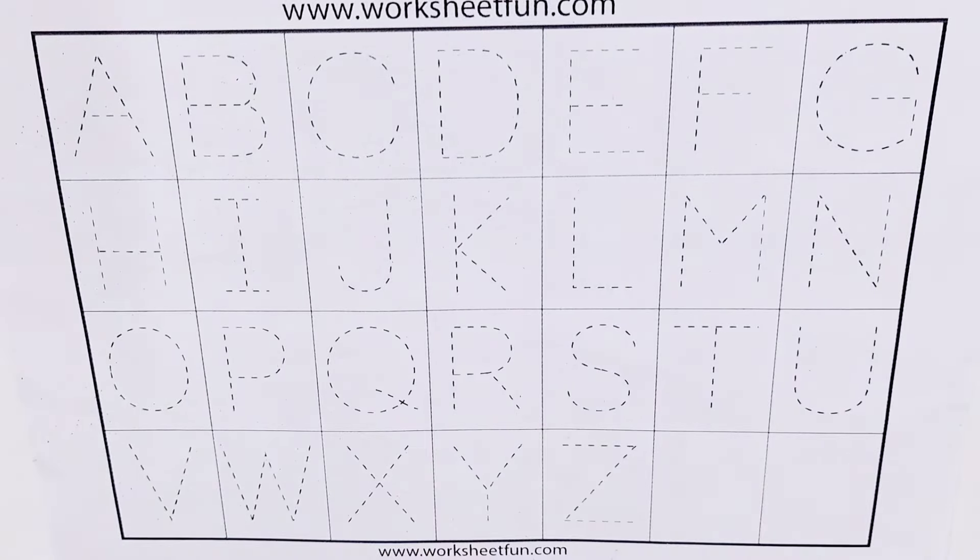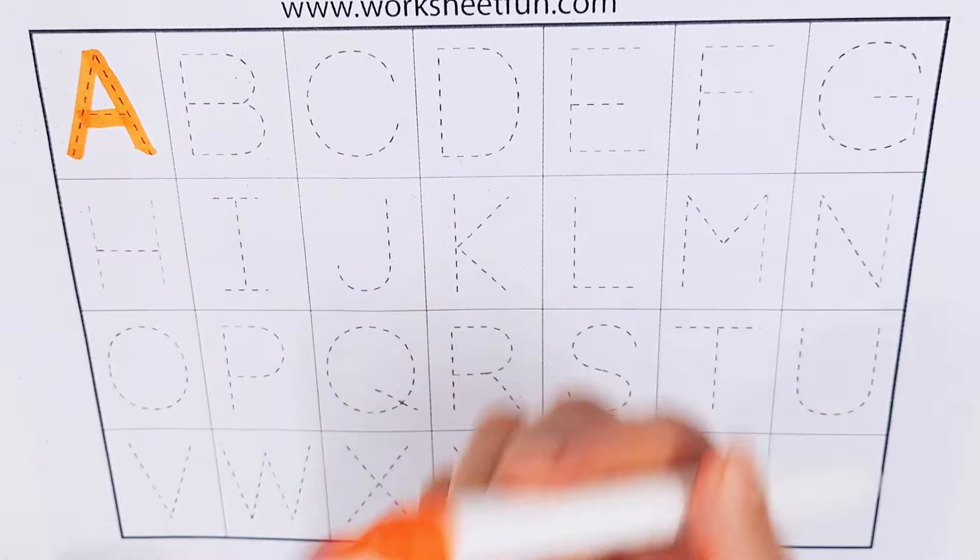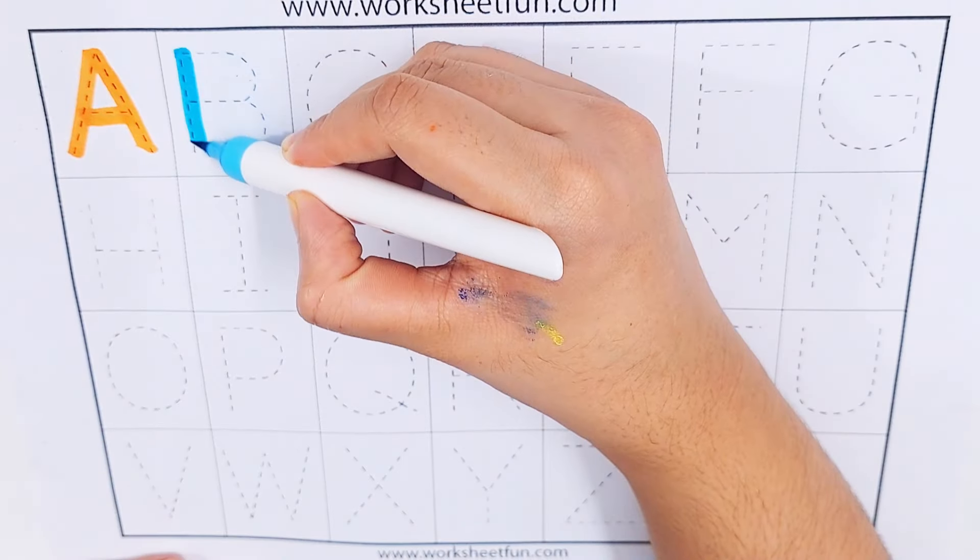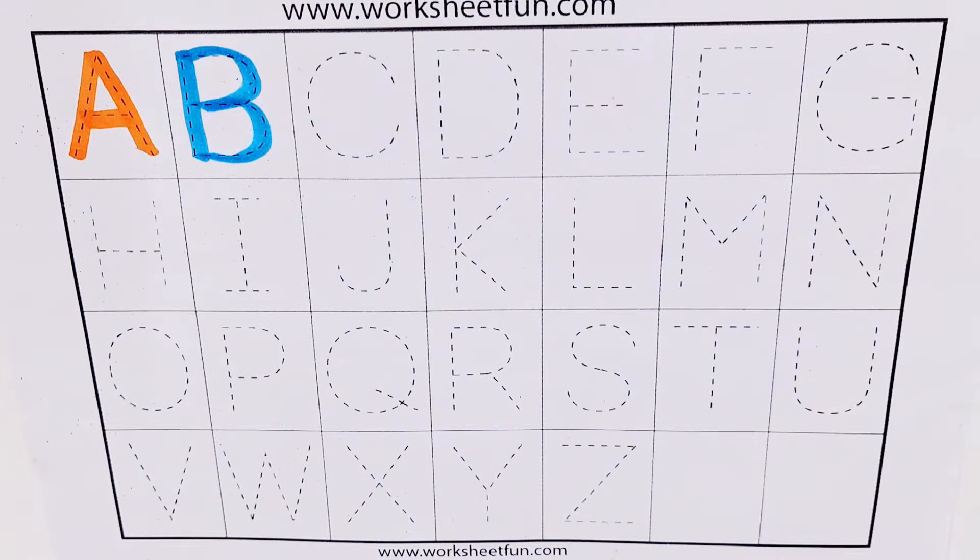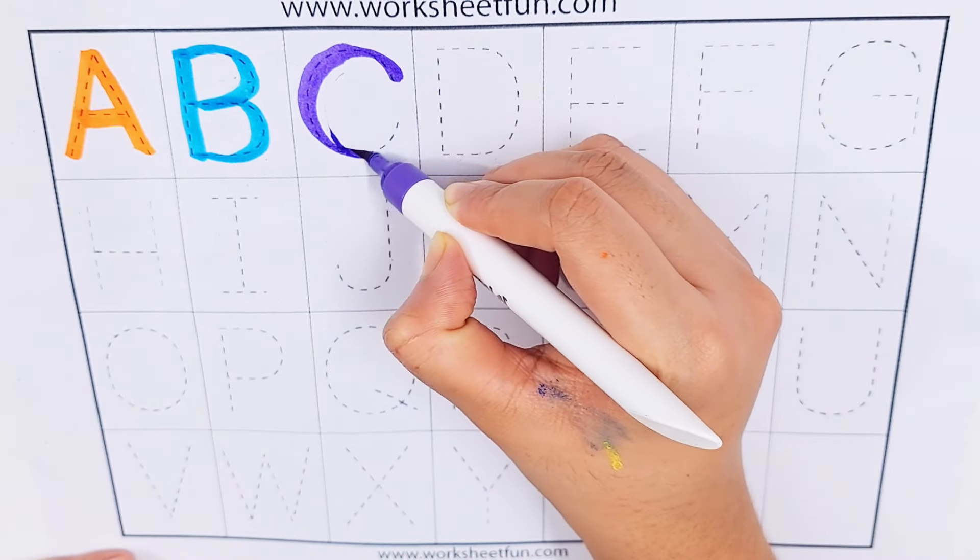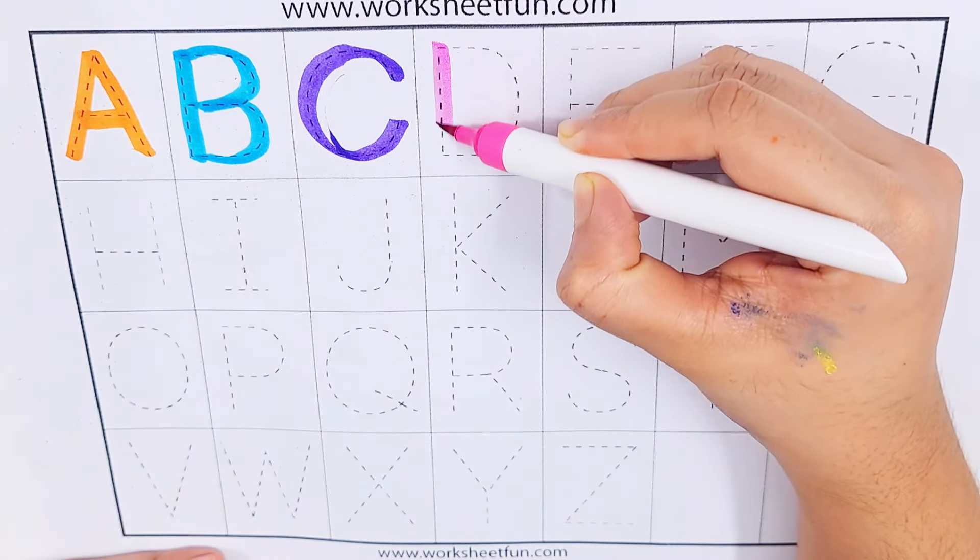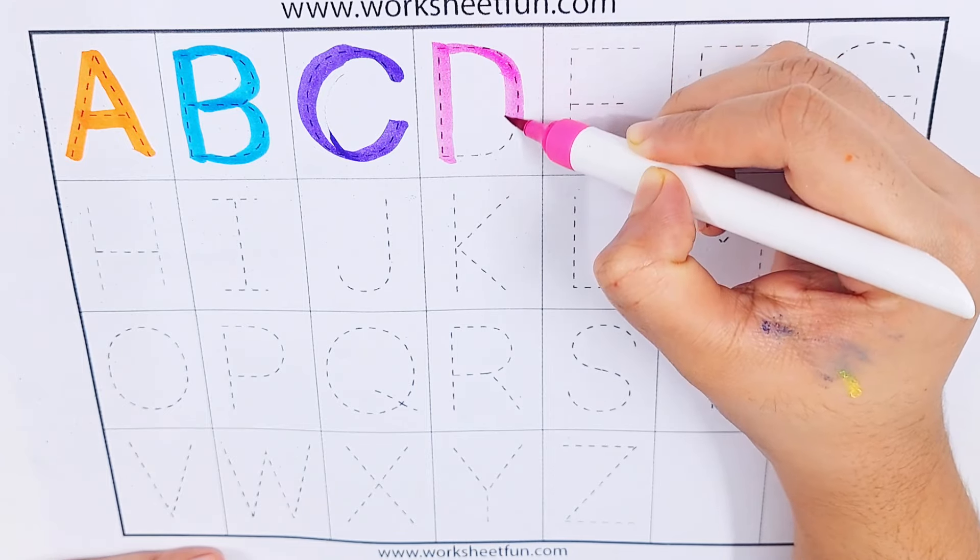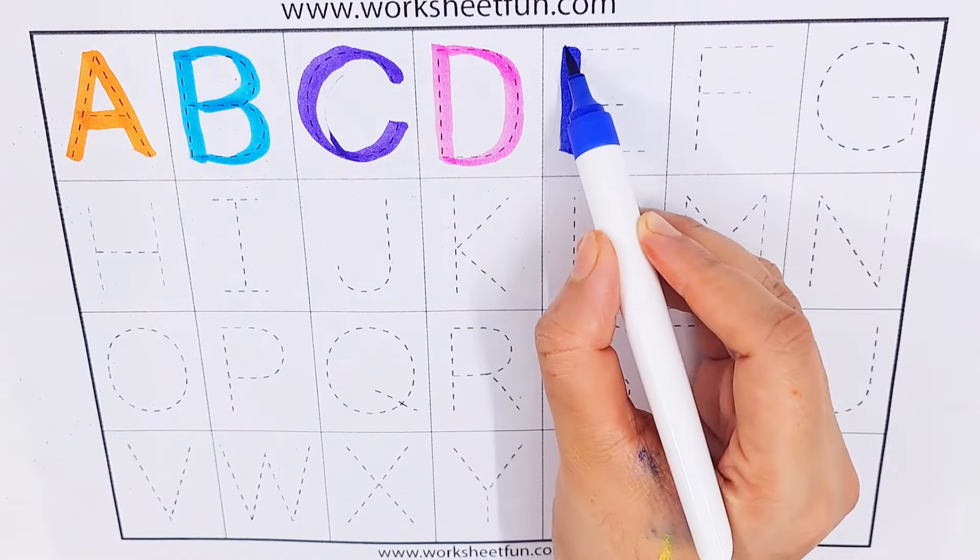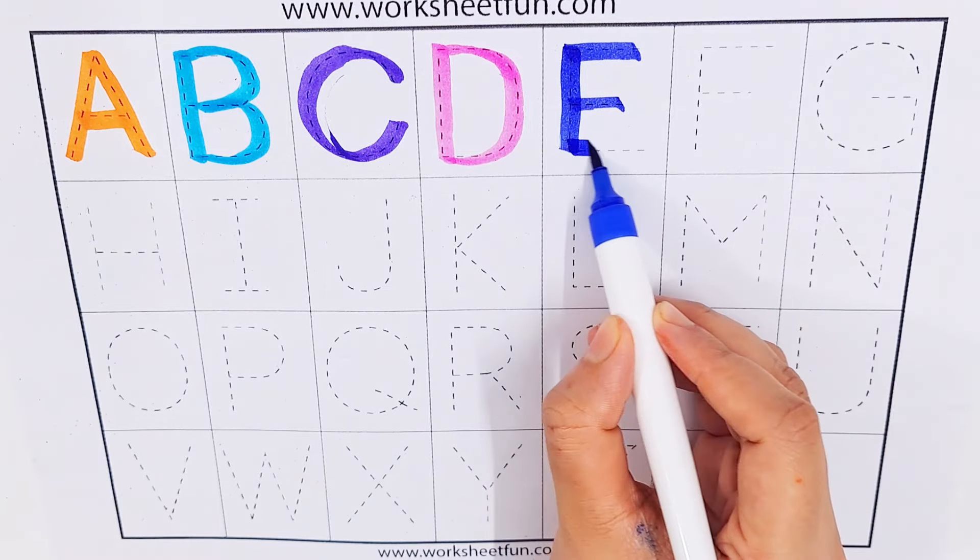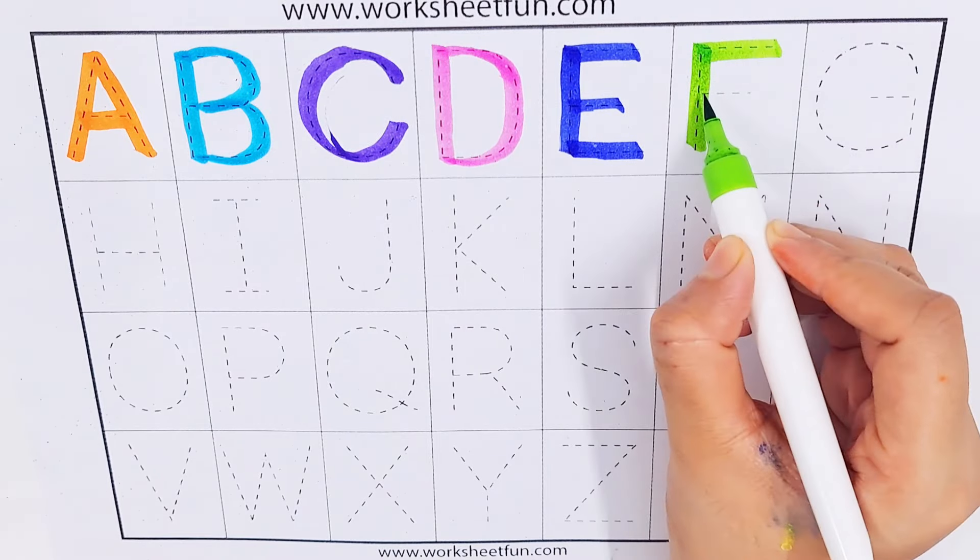A, B, C, D. A is for avocado, B is for books, C is for cake, D is for dinosaur, E is for eggplant, F is for flowers.